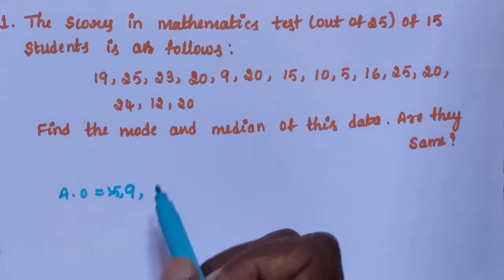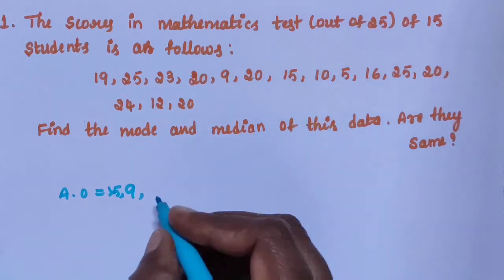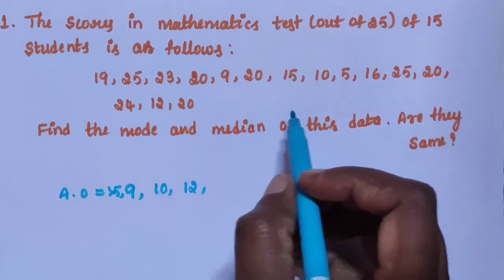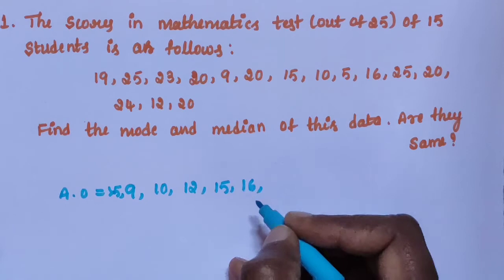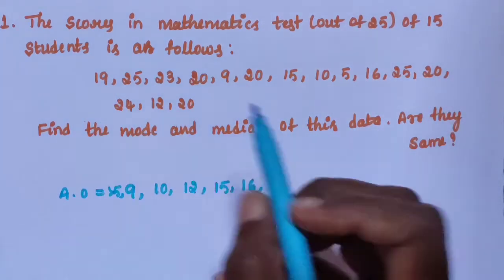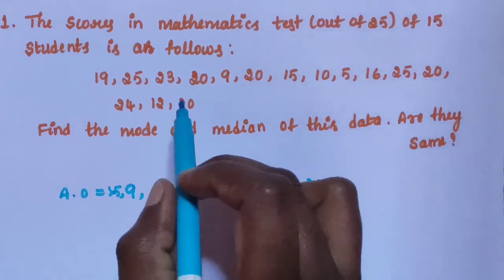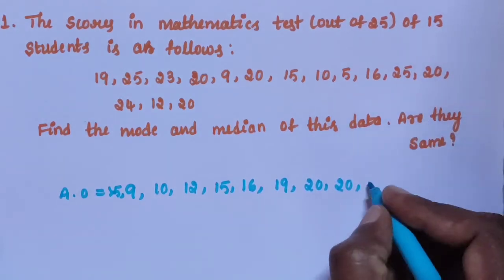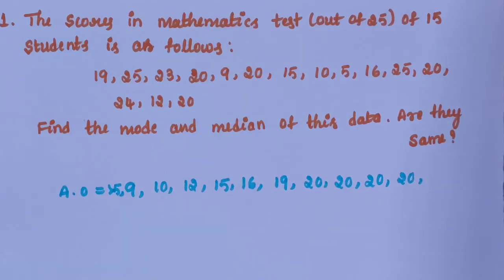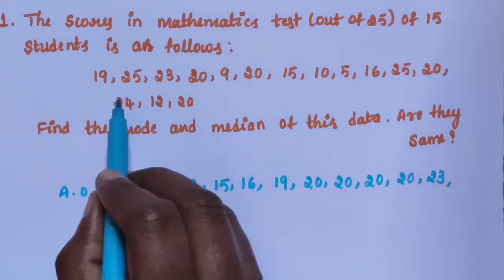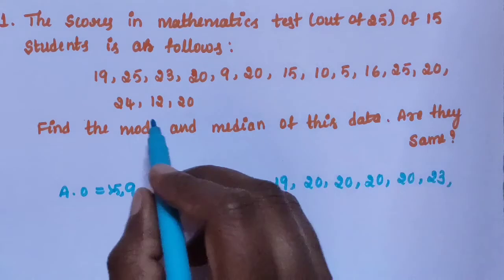Data arranged in ascending order. Ascending order: 5, 9, 10, 12, 15, 16, 19, 20, 20, 20, 20, 23, 24, 25, 25.